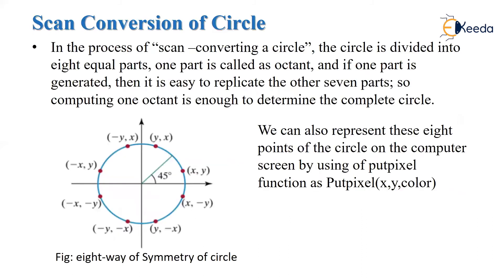Now, the scan conversion of circle. In the process of scan conversion of a circle, the circle is divided into eight equal parts using eight-way symmetry. Each part is called an octant, and each octant is 45 degrees. If we find any one point which lies on the circle, we can calculate all the remaining seven points. Suppose a point P1 has coordinates x and y.